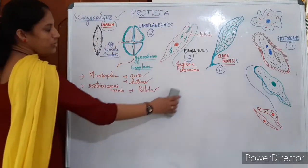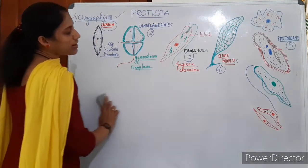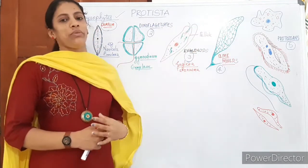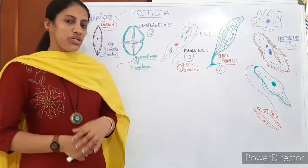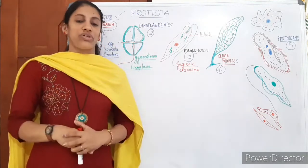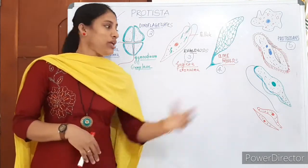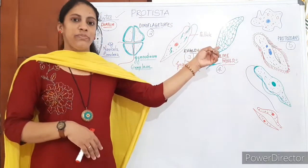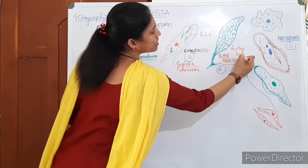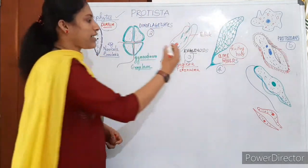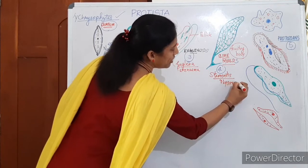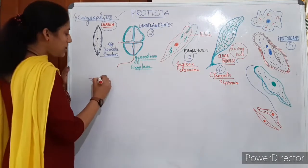The next group is Slime molds. Slime molds form a visible fruiting body at the time of reproduction. The fruiting body — called a sporangium — is not microscopic; it is visible to the naked eye and produces large numbers of spores inside. Examples include Physarum and Stemonitis.